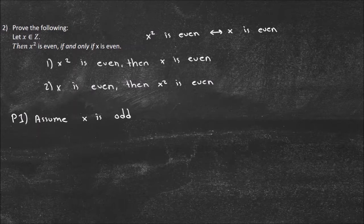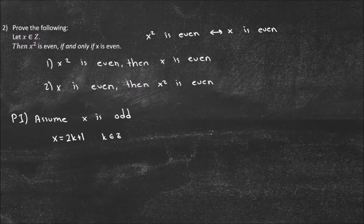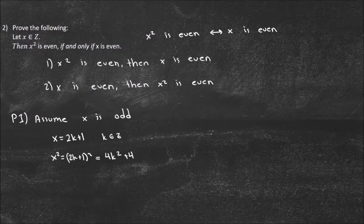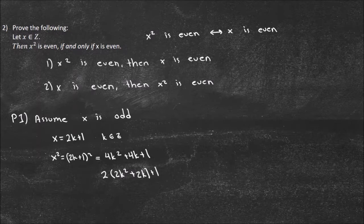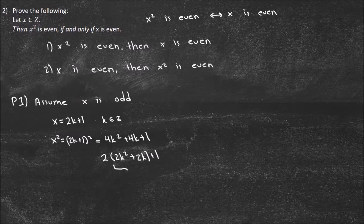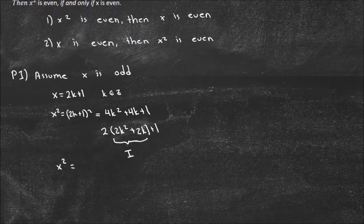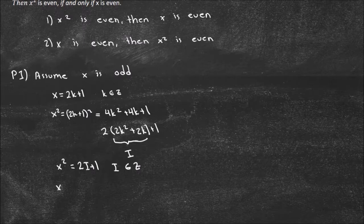So by proof by contraposition, X equals 2K plus 1, where K is an element of Z. Now I can say X squared equals (2K plus 1) squared. I'm not going to write out the foiling, but you get 4K squared plus 4K plus 1. Then you can simplify this by taking out a 2: you get 2 times (2K squared plus 2K) plus 1. We know that 2K squared plus 2K is an integer, so we let that be I. And now we get X squared equals 2I plus 1, where I is an integer — so X squared is odd.